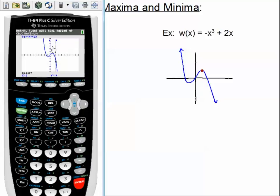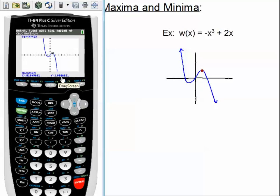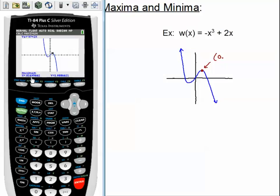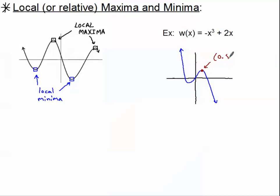You could make it really any number, but the calculator gets upset with you if you use too big of a number. So I'm going to put two and then enter. Basically, I've told the calculator that my maximum is in between zero and two. Then it asks you a third question about a guess — I usually just press enter again, let the calculator figure it out, and there it is. There should be a nice cursor on your maximum. The ordered pair is down here: x equals 0.816, y equals 1.089. I'm going to three decimal places unless it otherwise specifies. So this point right here was (0.816, 1.089).